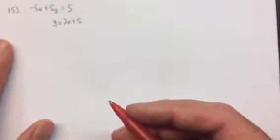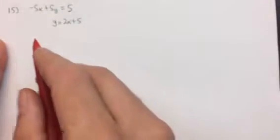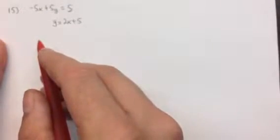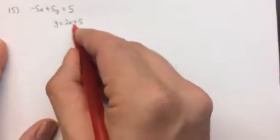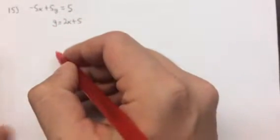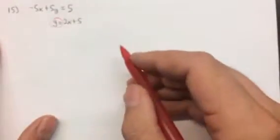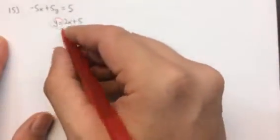In this case, there are many different ways to solve systems of equations. But for this problem, it's set up very nicely to solve using a certain method, and that method is substitution. Because we know what y equals, we could also do it if we knew what x equals, but because we know what y equals and we don't know that y equals something in the other one, we can substitute.